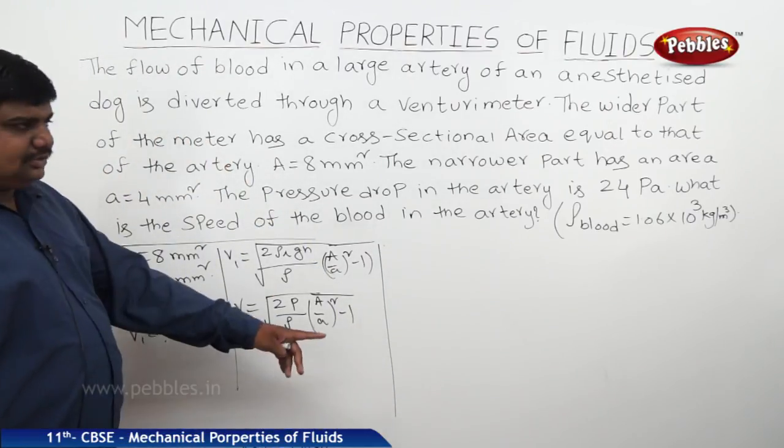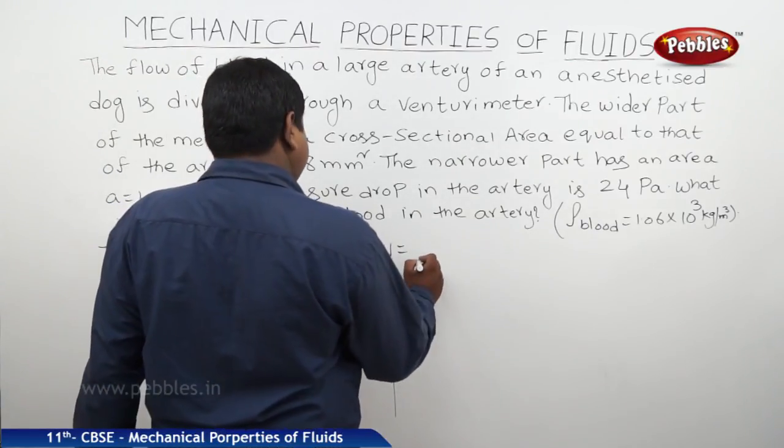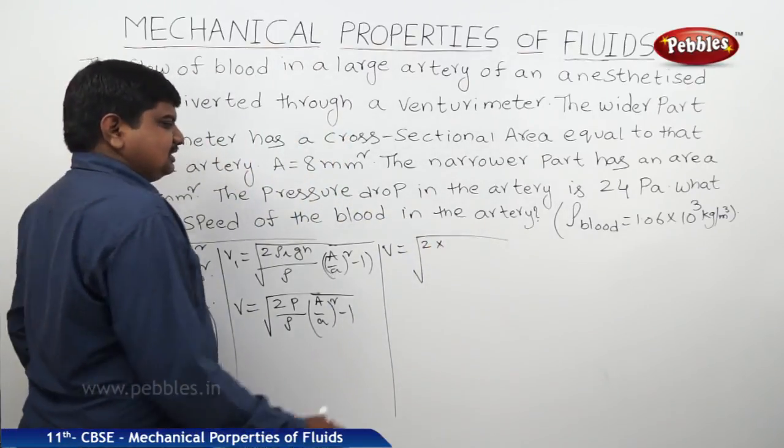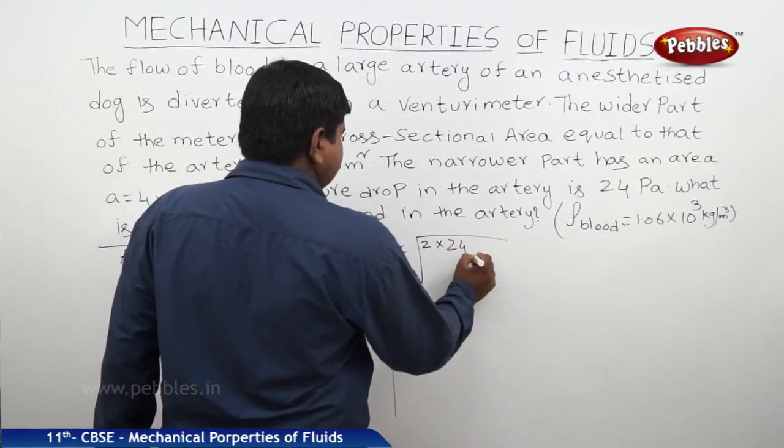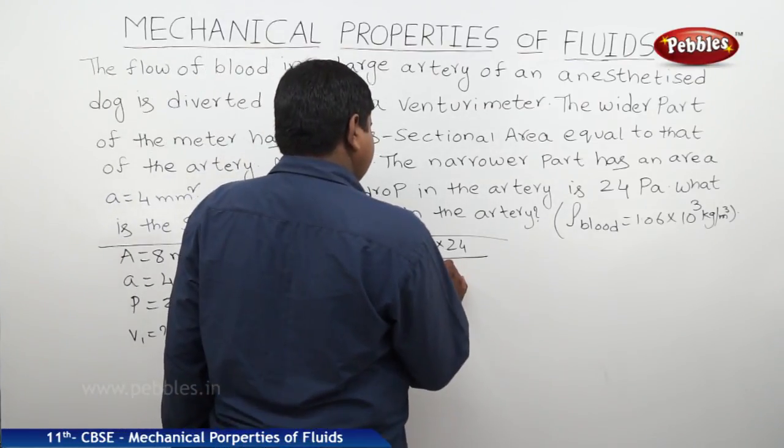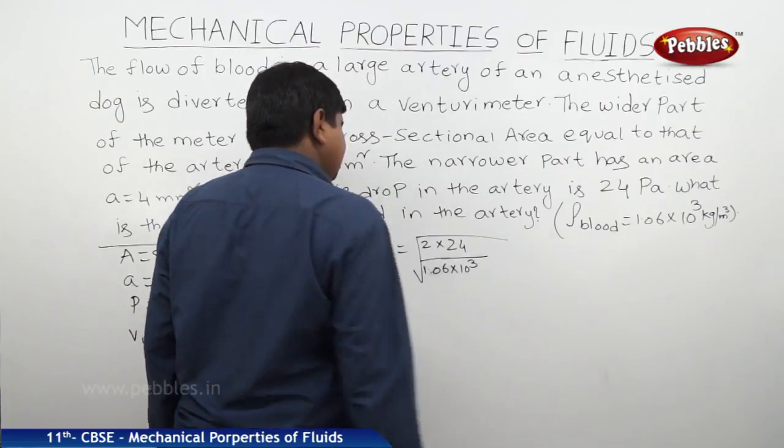Now I am substituting all these values which were given in the problem. Therefore, V equals square root of 2 times—what is the pressure? 24 Pa. What is ρ? 1.06 × 10³ kg/m³.